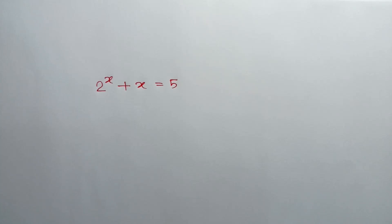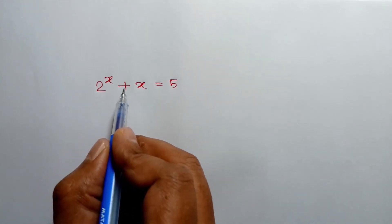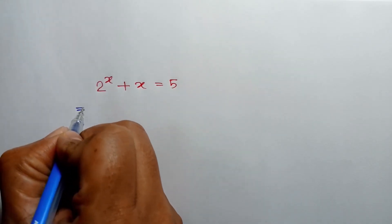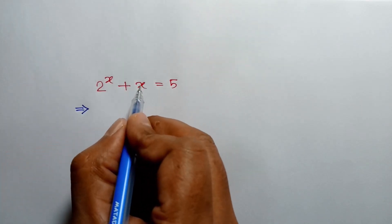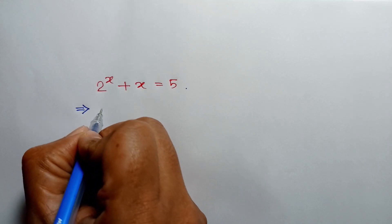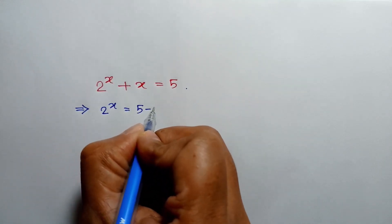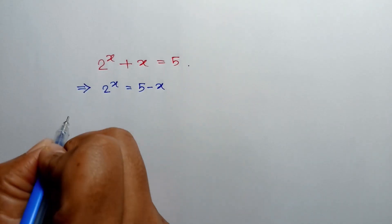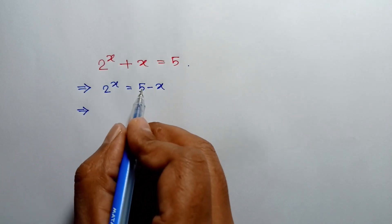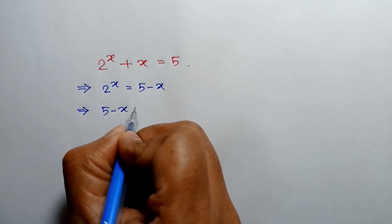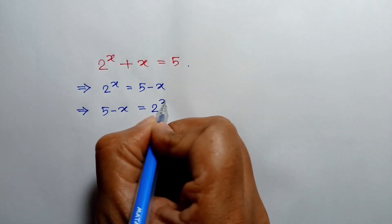Hi everyone. In this video, I am going to show how to solve this exponential equation: 2 to the power x plus x is equal to 5. Taking this x to the right side, we can write 2 to the power x is equal to 5 minus x. Or, exchanging sides, we can write 5 minus x is equal to 2 to the power x.